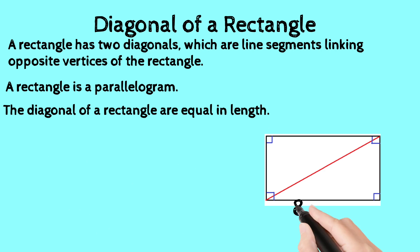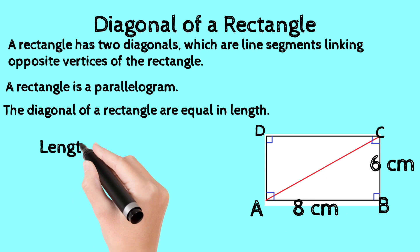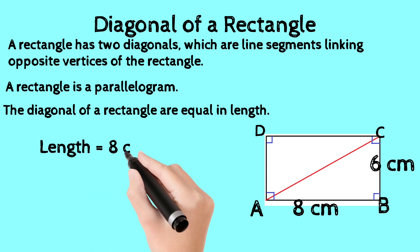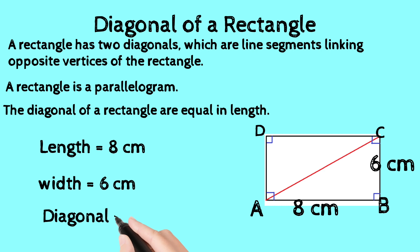See the diagram. In this diagram, we have length 8 cm and width 6 cm. A, B, C, D are its vertices. AC is the diagonal of the rectangle, which divides the rectangle into two triangles. We find the diagonal using the Pythagorean theorem, which gives us 10 cm.